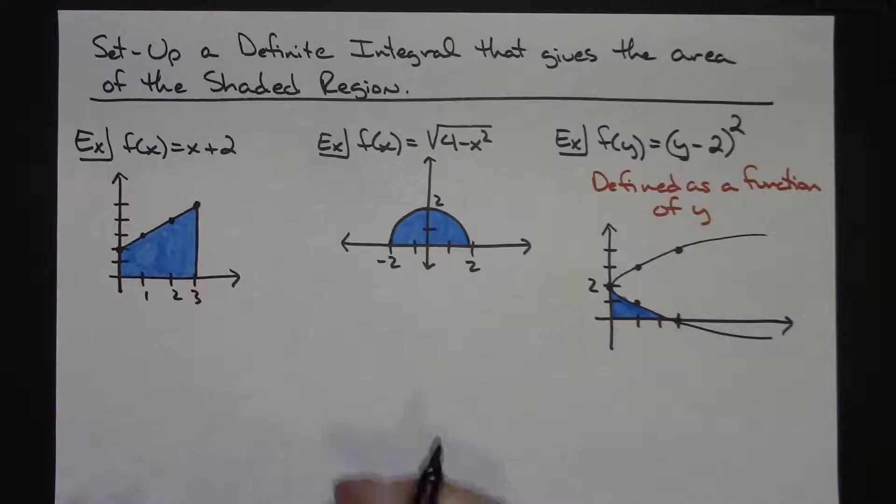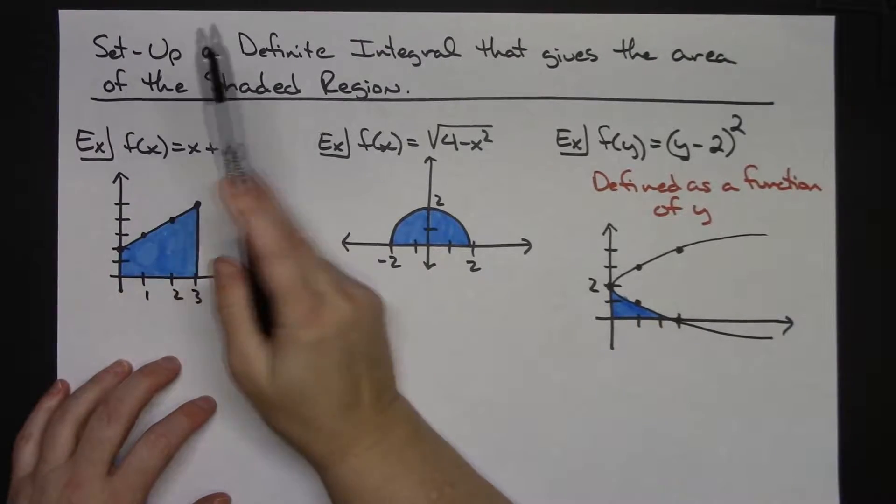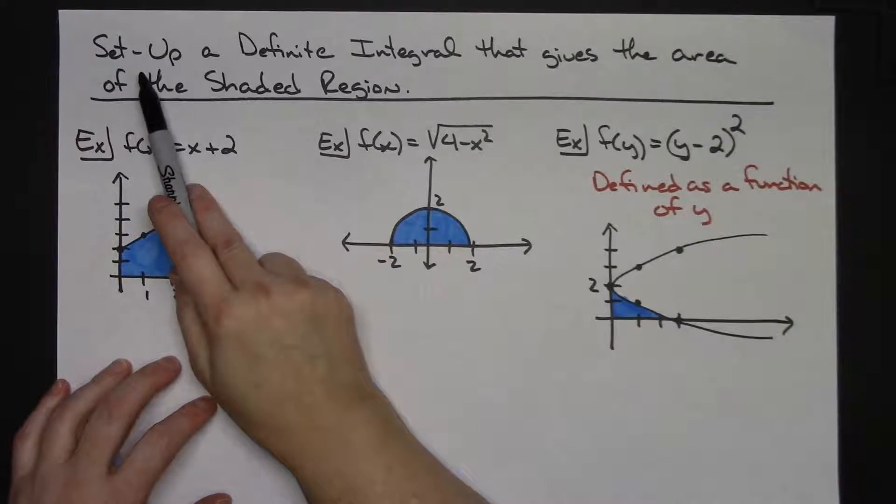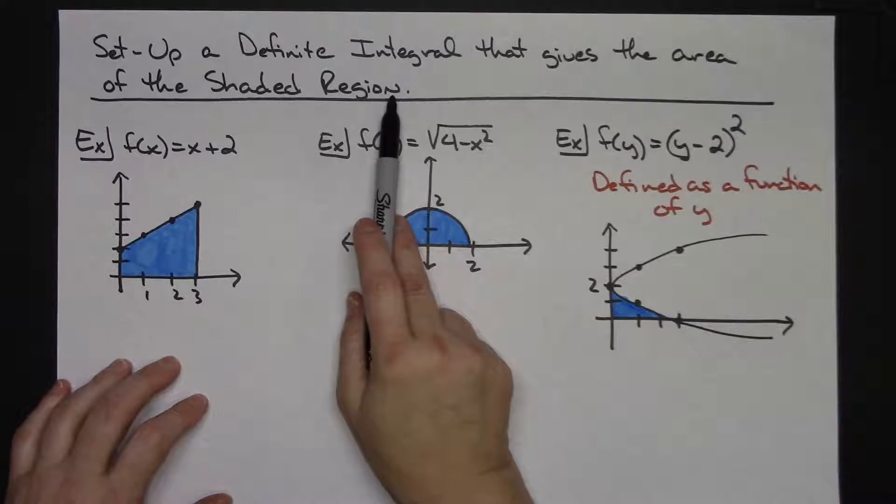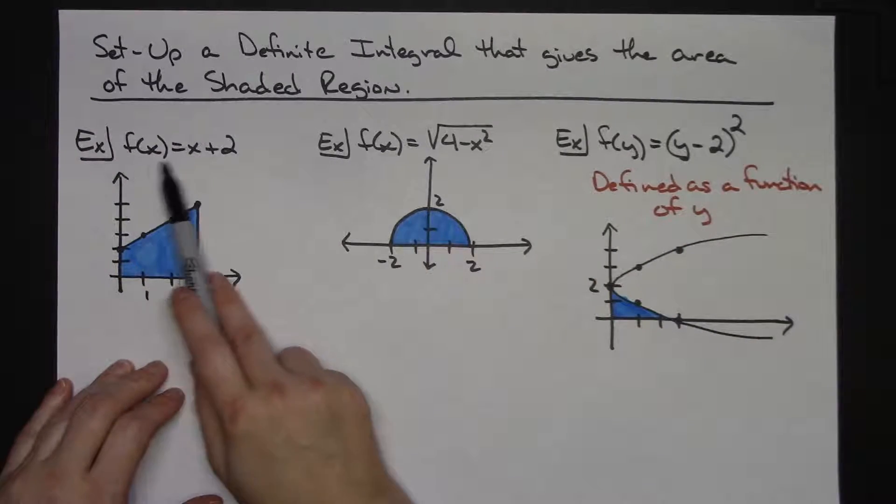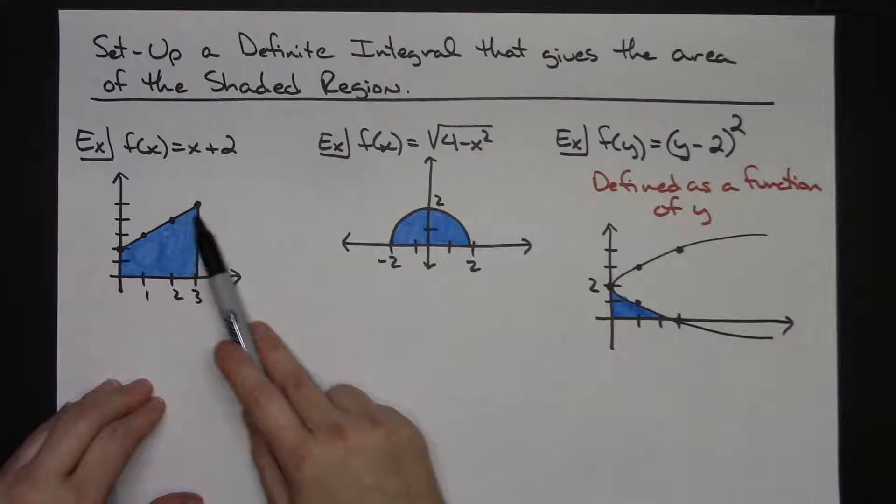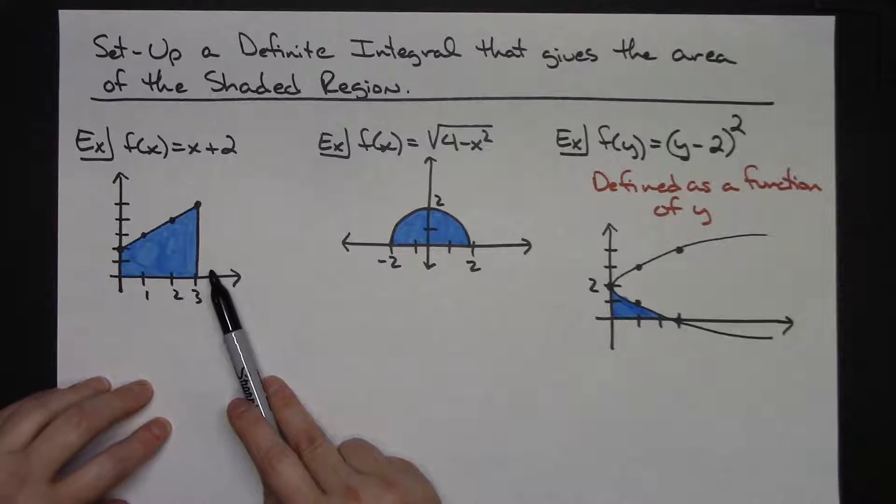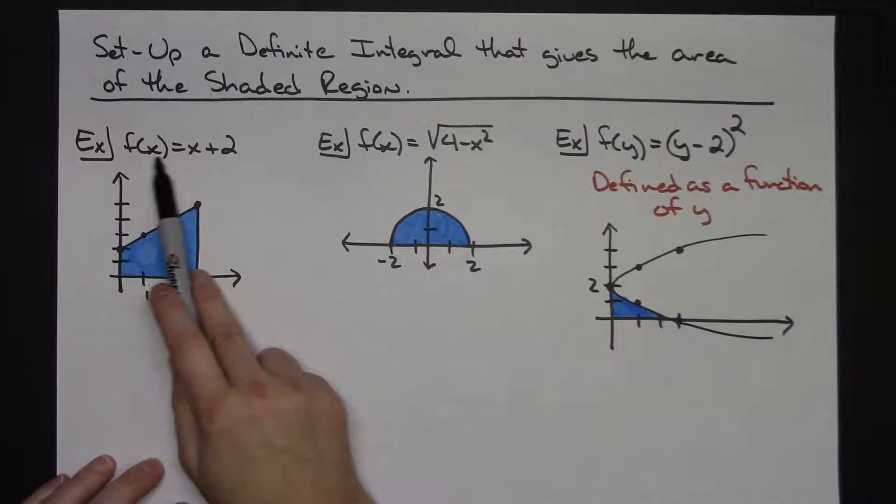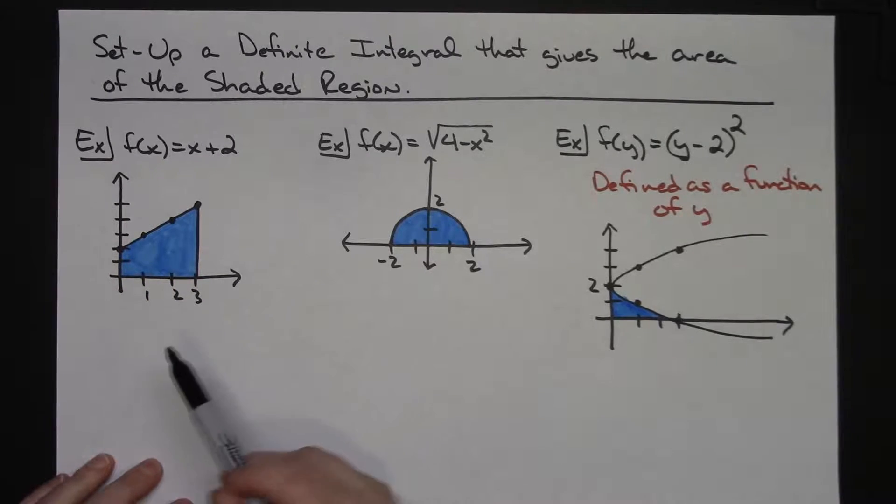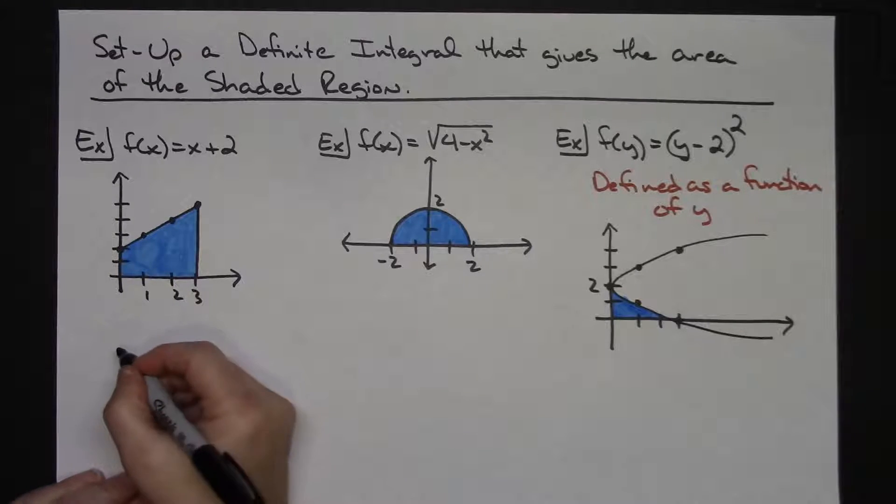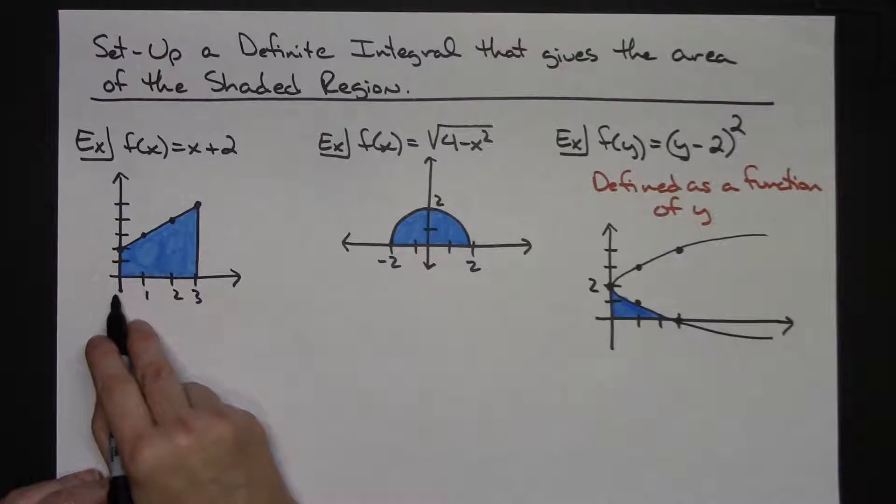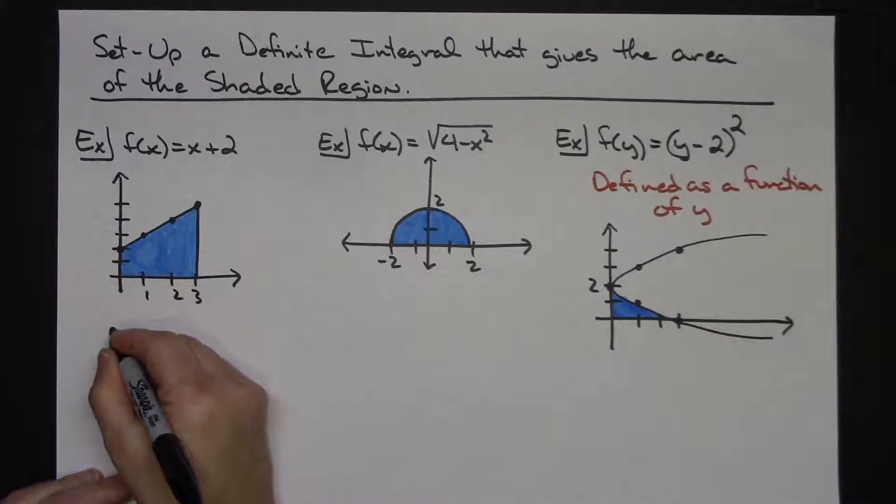Looking at some examples here, so let's suppose we had some directions that told us to set up a definite integral that gives the area of the shaded region, in which case they provide you with a function and then they provide you with a picture of that function. So this function is in terms of x, so when I run my limits of integration they're going to be along the x-axis, so this shape goes from 0 to 3 along my x-axis.